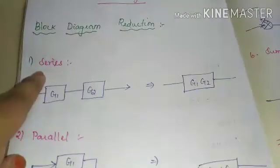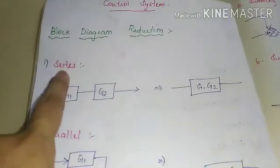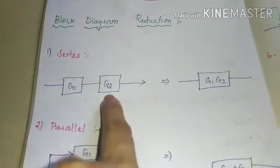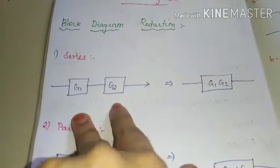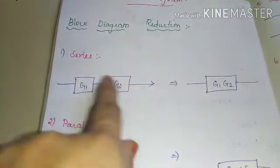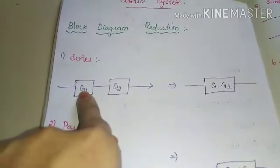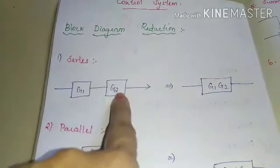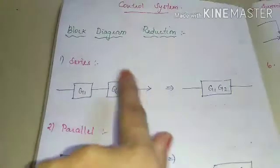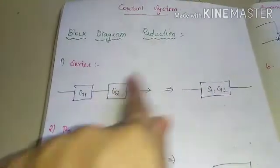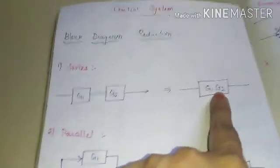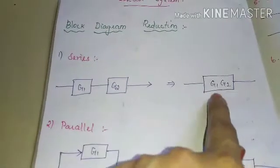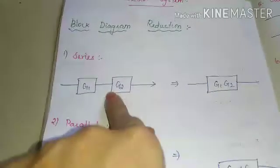The first rule is when two blocks are connected in series — that is, in cascaded form. Cascade means two blocks are connected in series. If two blocks are connected in series, we have to multiply the gains of these two blocks. The gain of the first block is G1 and the gain of the second block is G2. So, we have to replace these two cascaded blocks with a single block whose gain is G1 × G2.